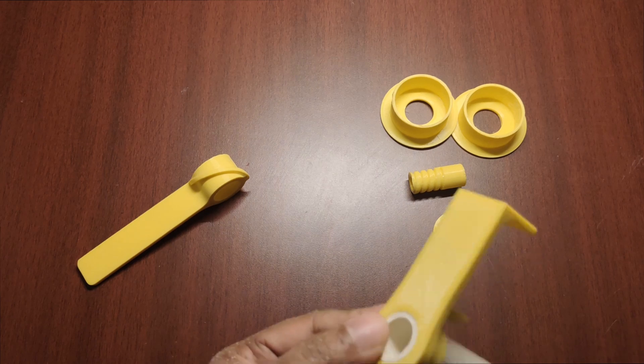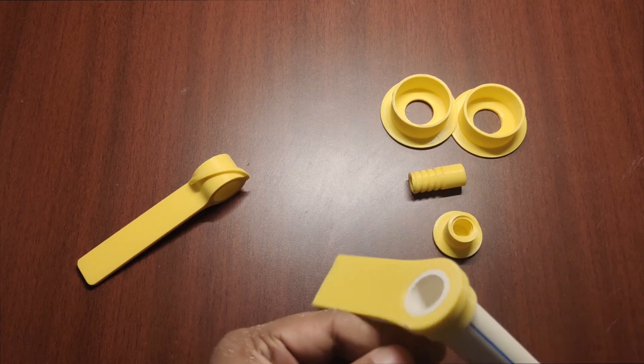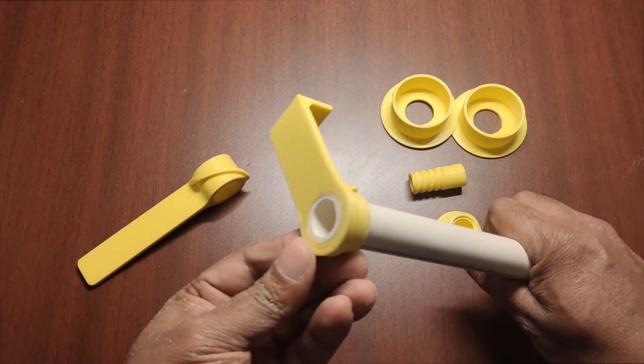As a first step, let's insert and glue the pipe to the overhead mount. The pipe fits perfectly in the mount.